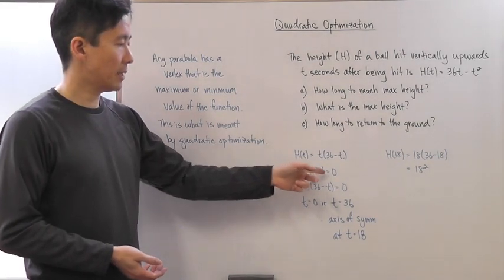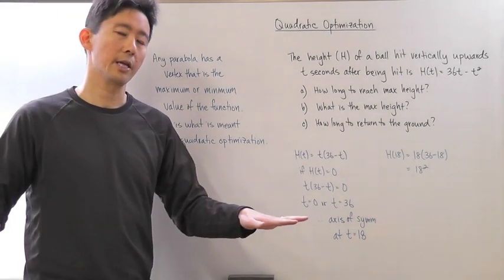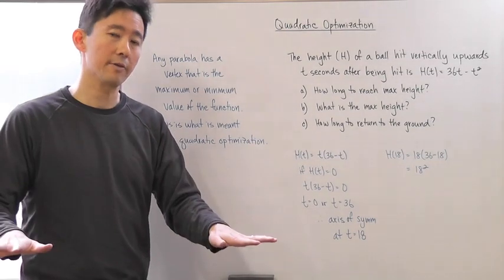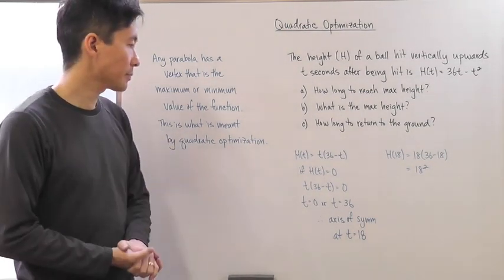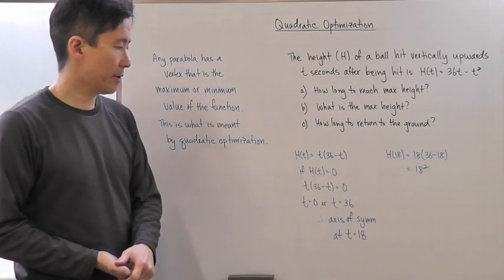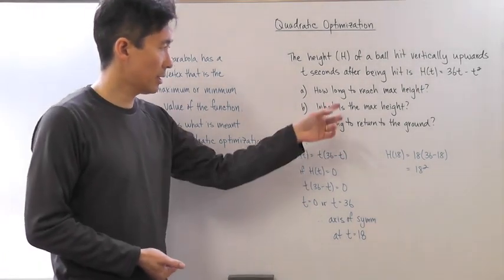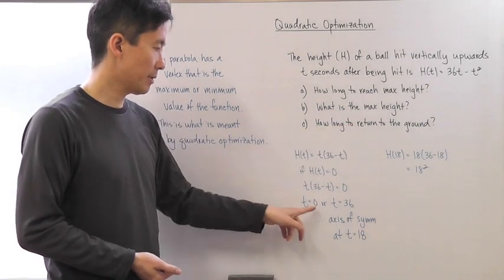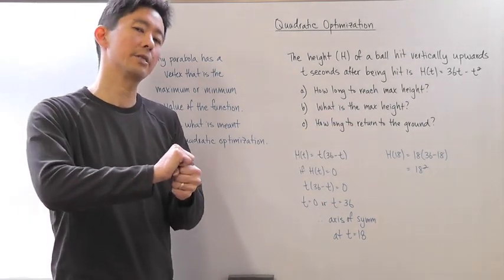If we let h(t) be equal to zero, or the height from ground be equal to zero, so we're at ground level, then we can say that t is going to be equal to zero or t is equal to 36. So how long will it take to return back to the ground? 36 seconds, because when t equals zero it's at the ground, it goes up, and comes back down at 36 seconds.